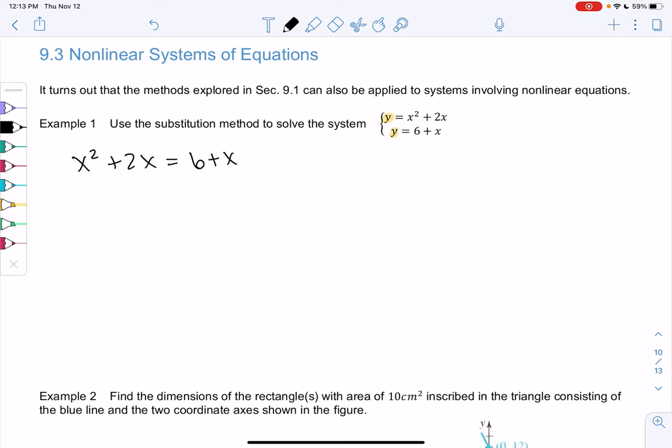So x squared plus 2x equals 6 plus x. And then since it's a quadratic, I'm going to move everything to one side and then factor. So we'll subtract x and we'll subtract 6 and we will get x squared plus x minus 6 equals 0.